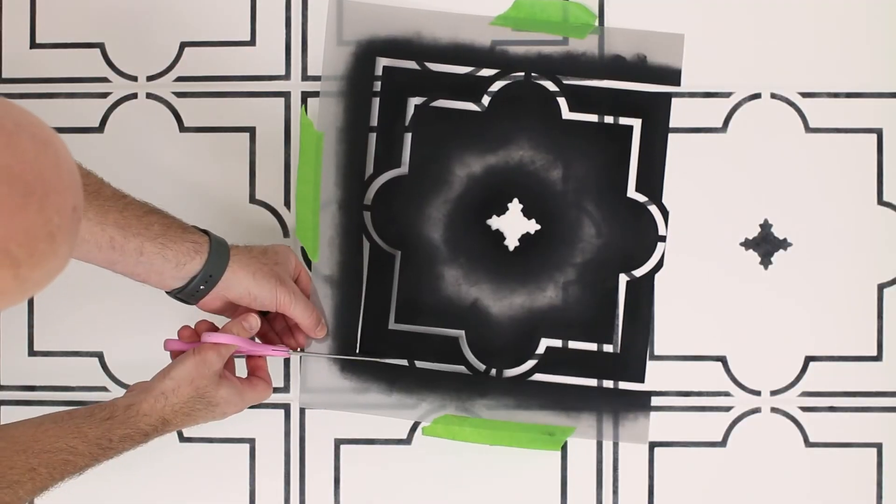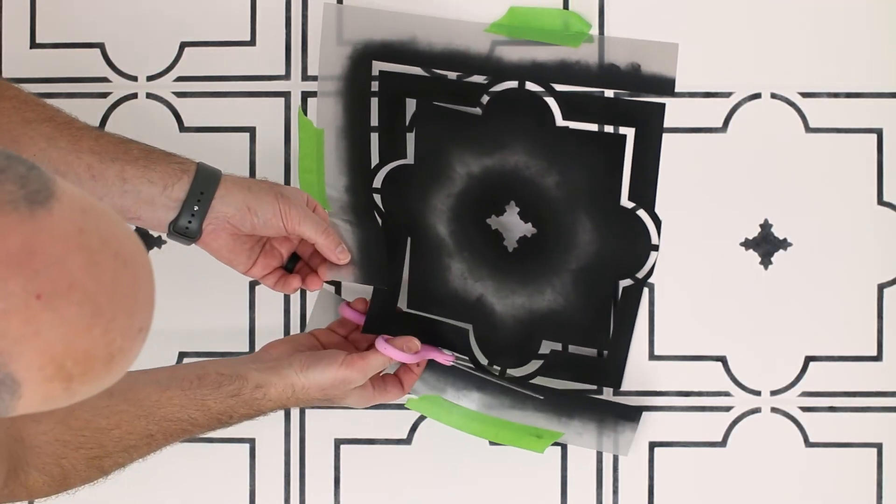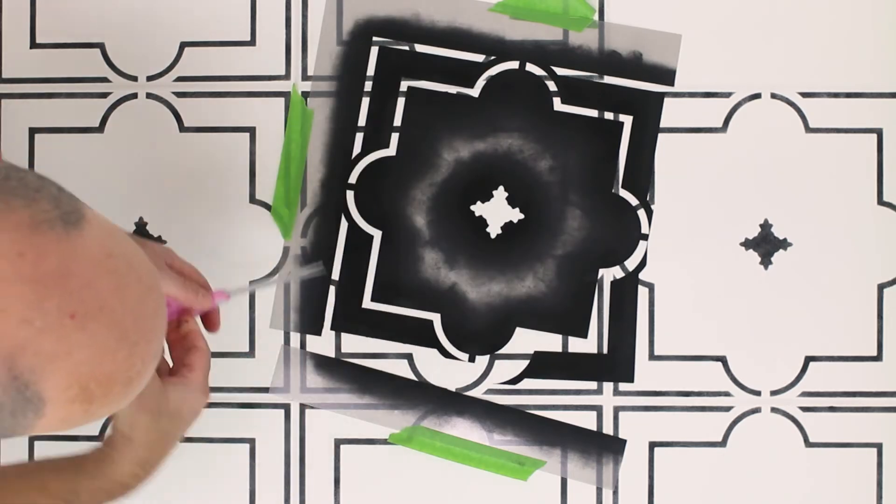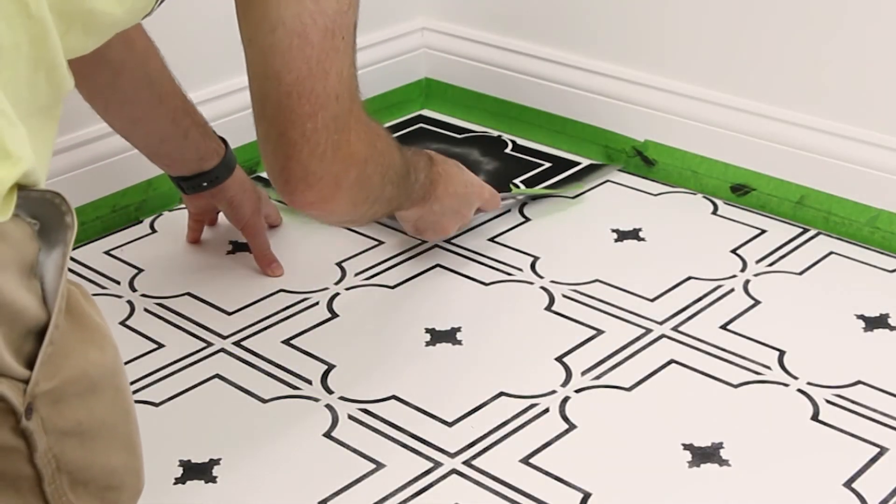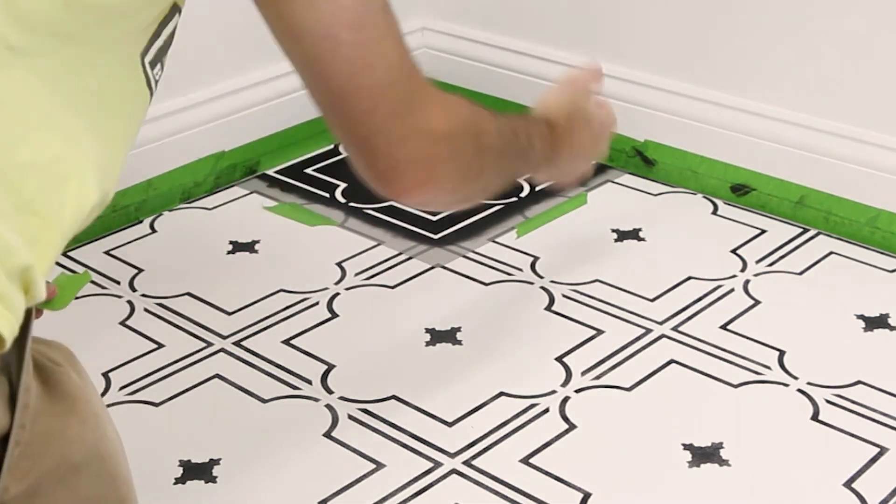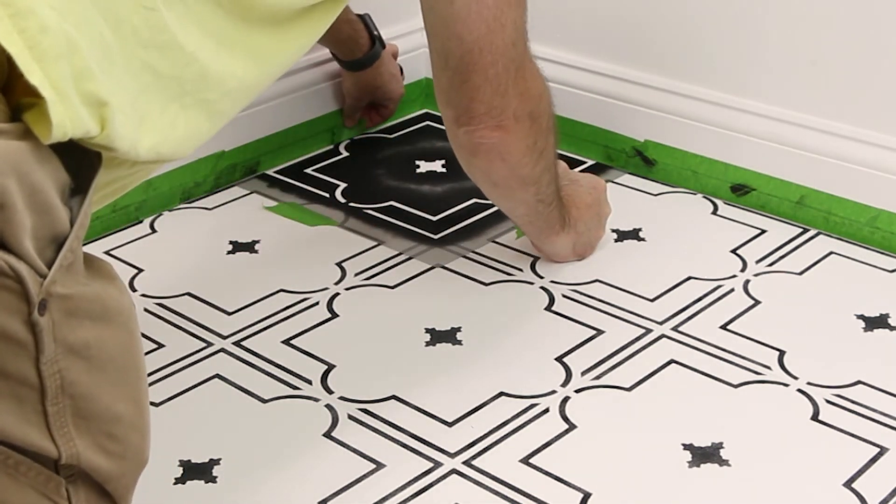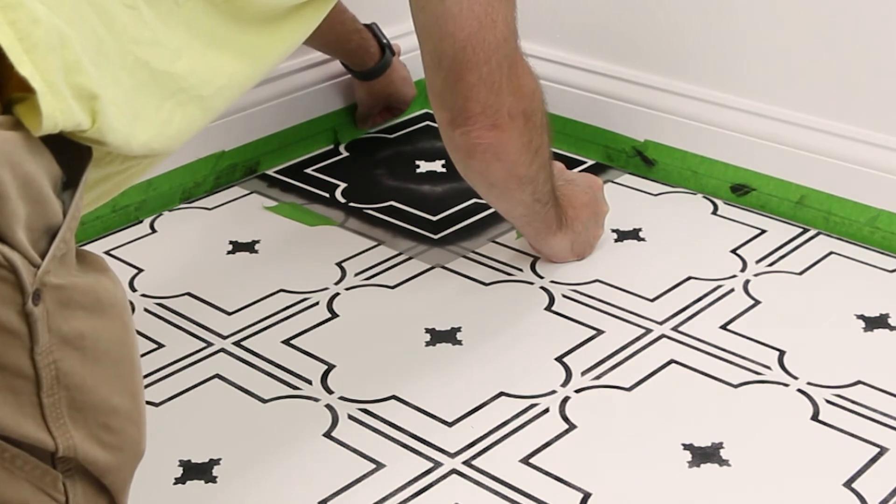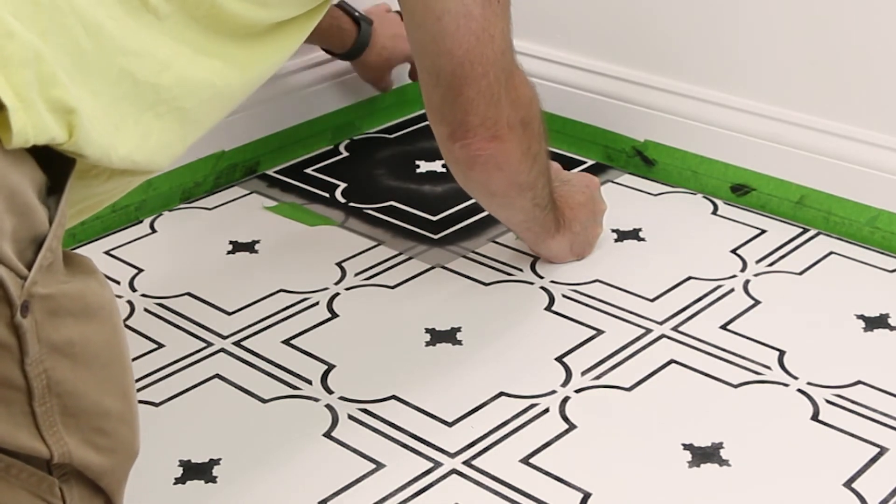For the corners, cut away an additional side of the stencil being careful to leave any stencil breaks in place. Add some tape to any gaps between the pattern and the wall or, if necessary, to hold loose portions of the stencil in their proper location.